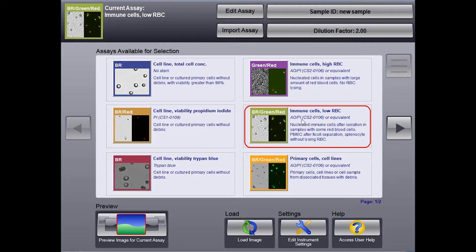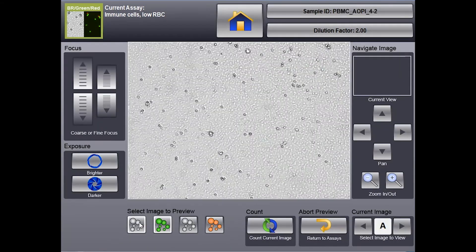In the software, you'll want to select the primary cell lines assay and click on preview image for current assay. See how this image is blurry? We will need to adjust the focus.